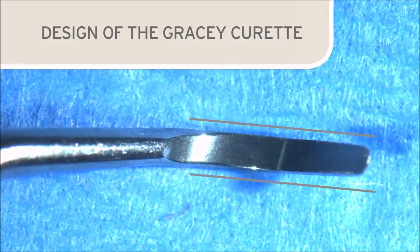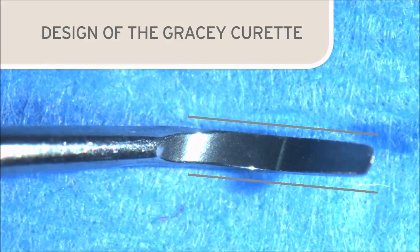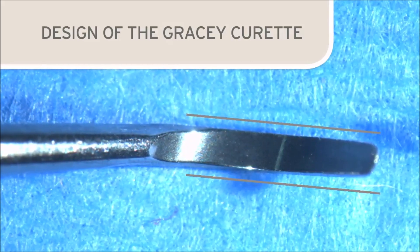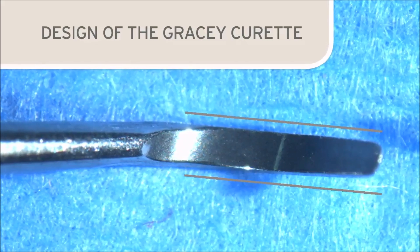Close inspection shows that the lower cutting edge is parallel to the non-functional edge of the Gracey. It is just lower due to the 70-degree angle of the blade. This is important to remember in order to retain the original blade design when sharpening.